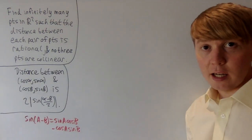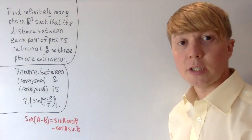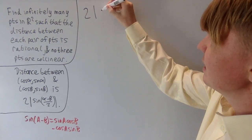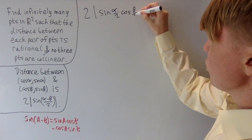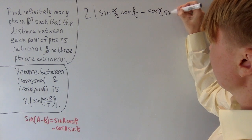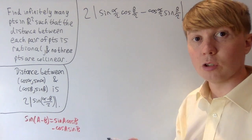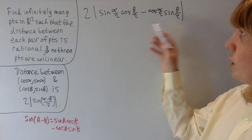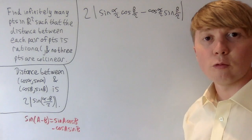We can put this into a slightly nicer form using the angle subtraction formula for sine. The distance between two generic points on the unit circle is 2 times the absolute value of (sin(α/2)cos(β/2) − cos(α/2)sin(β/2)). This is particularly useful because the plan is to choose α and β so that each of these terms — sin(α/2)cos(β/2) and so on — is itself rational.